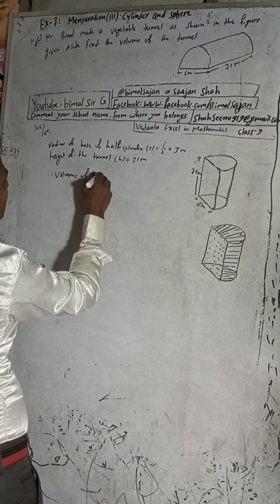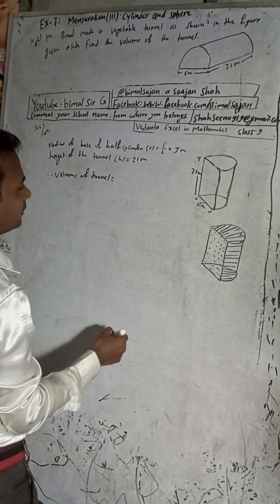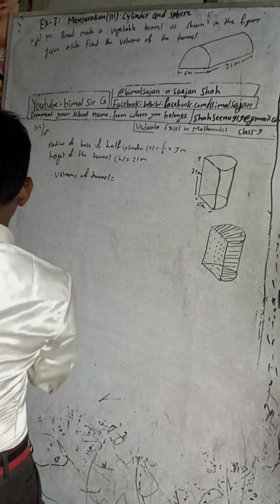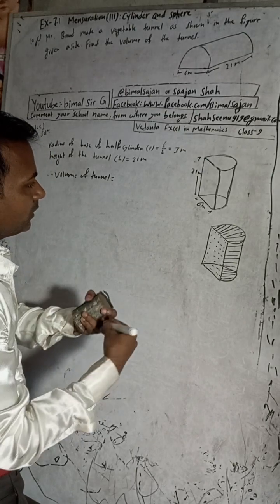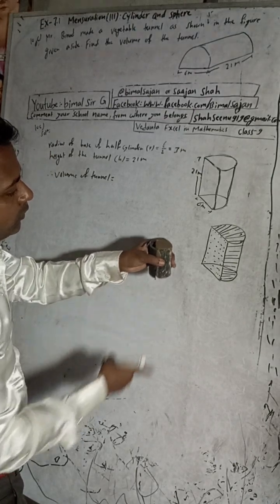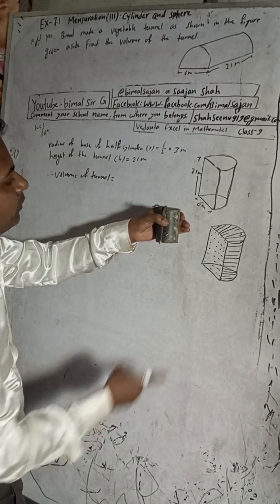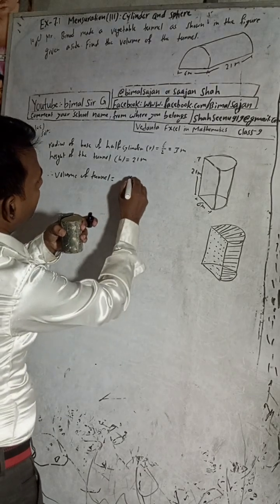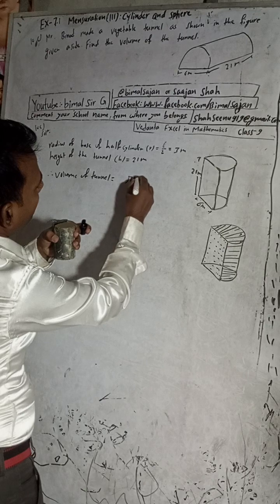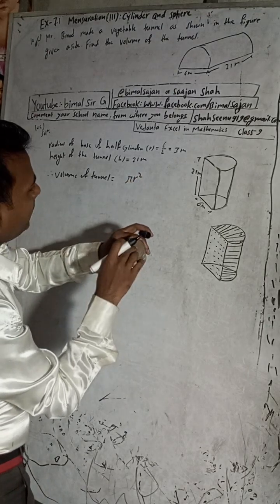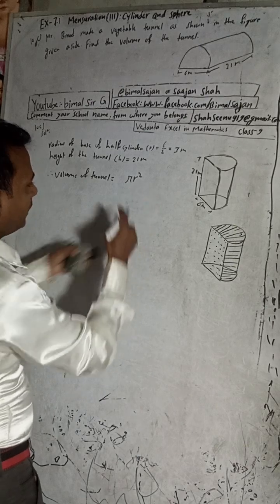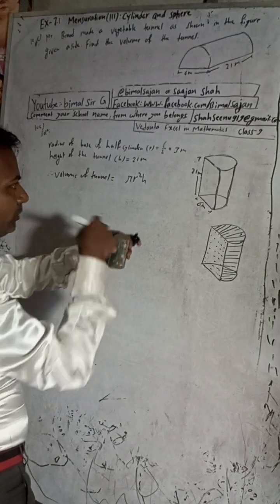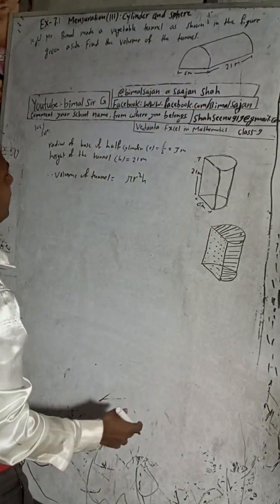Volume of tunnel - suppose this is a cylinder. For the cylinder, what is the formula of the volume? For the cylinder, volume will be π r² - that means this cross section area π r², the circular area into height. This is the volume of the complete cylinder, but this is the half cylinder.